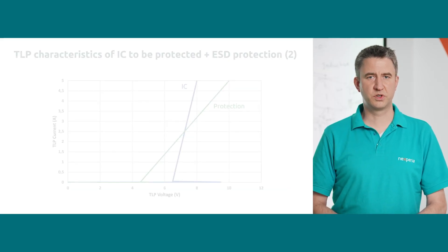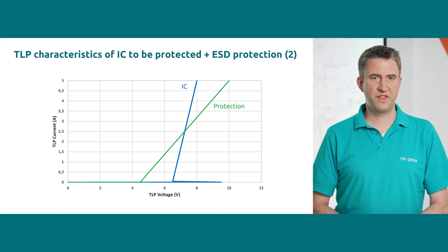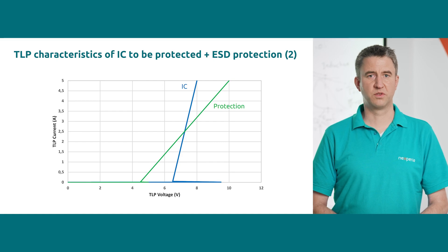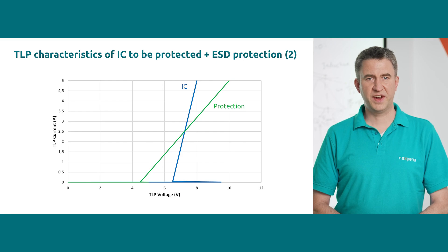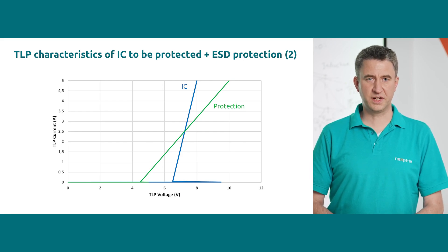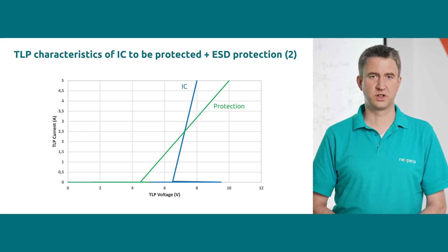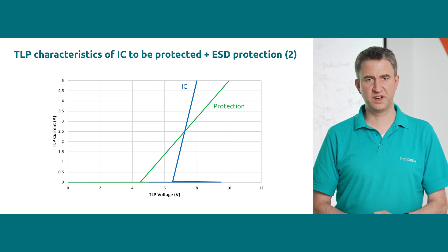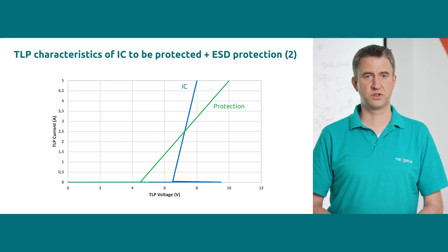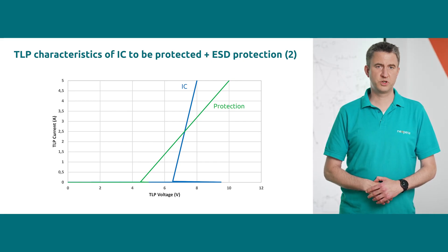In the second case, we can observe that the external ESD protection triggers at a lower voltage than the IC's internal protection. However, at higher currents the two curves intersect, which means that at some point the clamping of the external ESD is rising above that of the internal protection. In other words, the external protection would lose its initial advantage and may let more current be discharged via the IC's internal protection. To solve this, an external protection with lower turn-on resistance should be chosen.